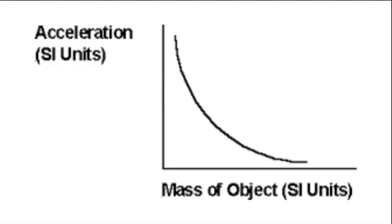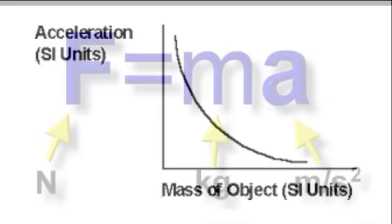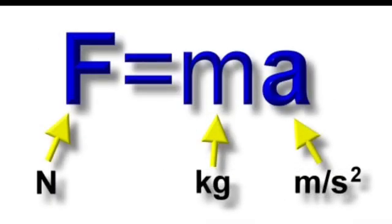It would look like this. As the mass increases, the acceleration decreases. Remember, the resultant force was fixed. I fixed it at 1 newton. As the mass increases, the acceleration decreases for a fixed mass. Mass and acceleration are inversely proportional.